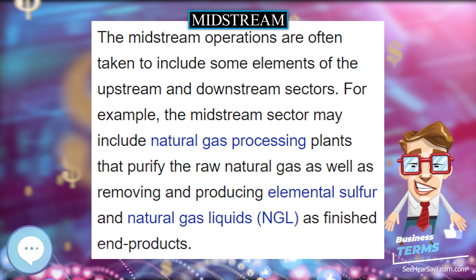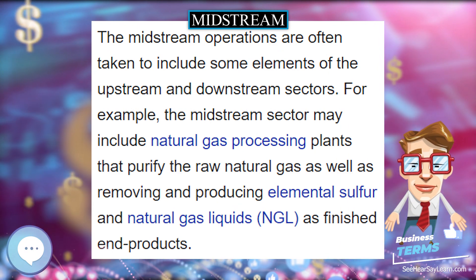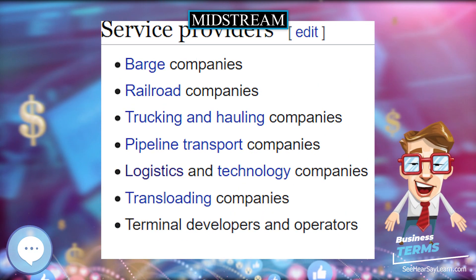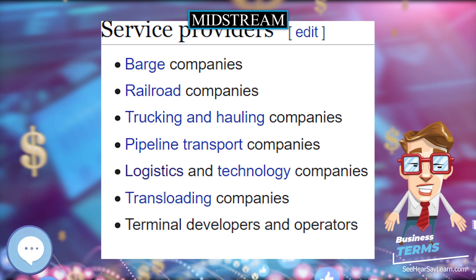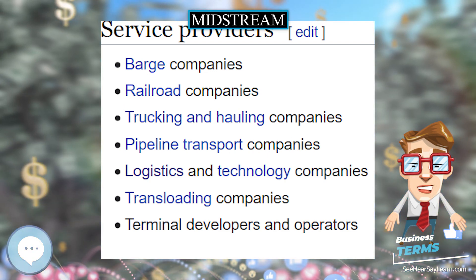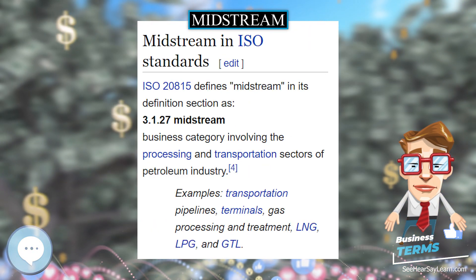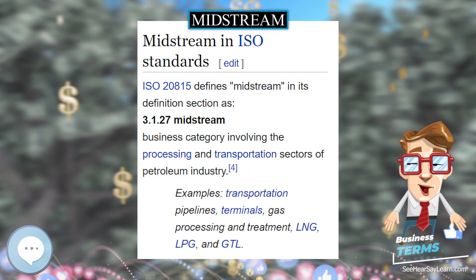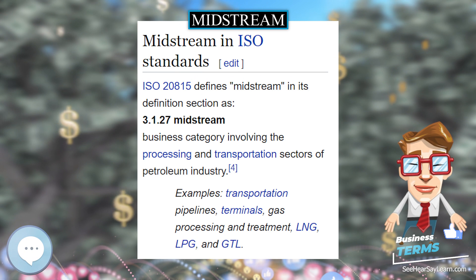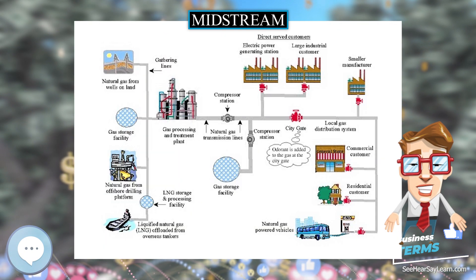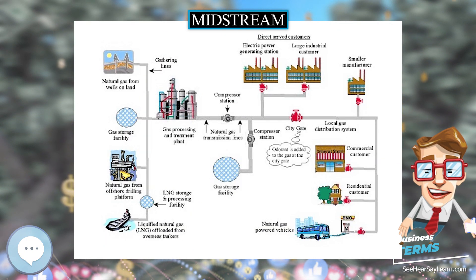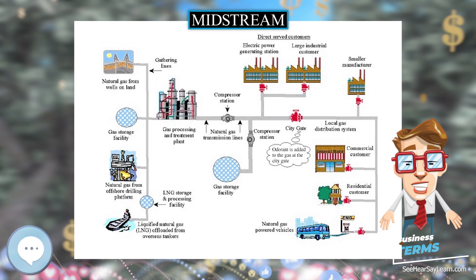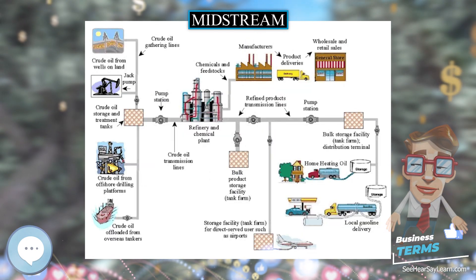ISO 20815 defines midstream in its definition section as: 3.1.27 — midstream: business category involving the processing and transportation sectors of the petroleum industry.